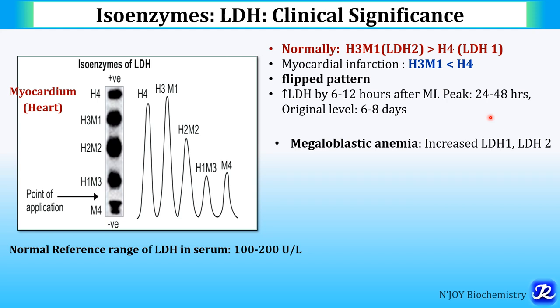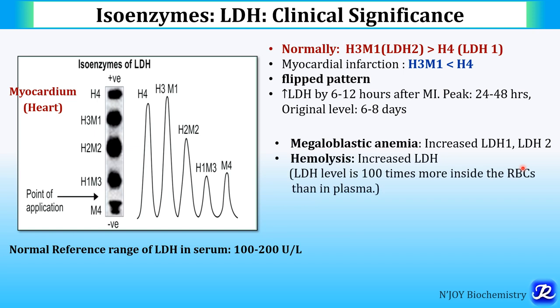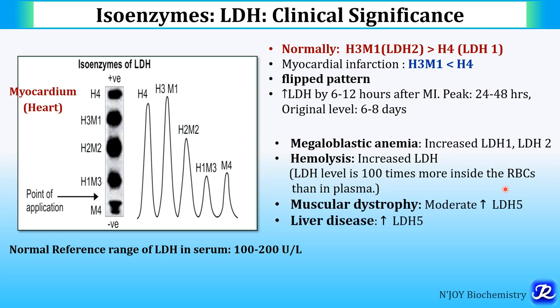LDH is also increased in megaloblastic anemia, particularly LDH1 and LDH2. It is also increased in hemolysis — LDH levels are 100 times higher inside RBCs than in plasma, so hemolysis always increases LDH. In muscular dystrophy, there is a moderate increase in LDH5, and in liver disease also, an increase in LDH5 is seen.